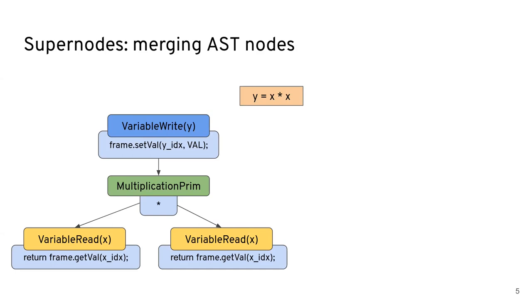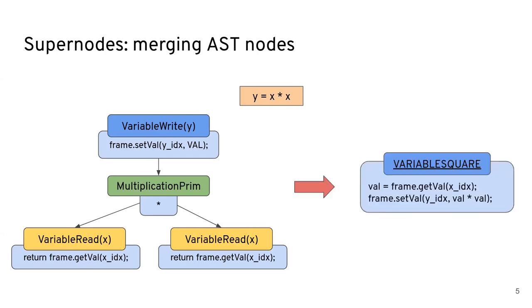And our idea was, what if we combine all of these nodes together into a single node with the exact same behavior? So in this context, the super node generated from this AST would look like this. So we just get the value of x in the same way as the variable read, store it in a local variable, and then we just assign it to the frame at the index of y. So we have the exact same behavior, we're using the same code, and we get the exact same result out of it because it's essentially the same behavior.